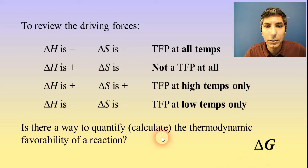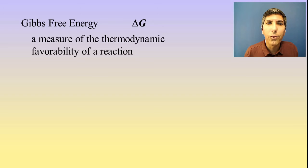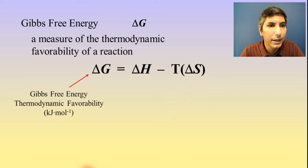Now that represents Gibbs free energy, delta G. Gibbs free energy is, like I said earlier, a measure of the thermodynamic favorability of a reaction. And the way that we mathematically calculate delta G is using this equation right here: delta G equals delta H minus T times delta S. Now delta G is what we call Gibbs free energy, and that's a measure of the thermodynamic favorability of a process.